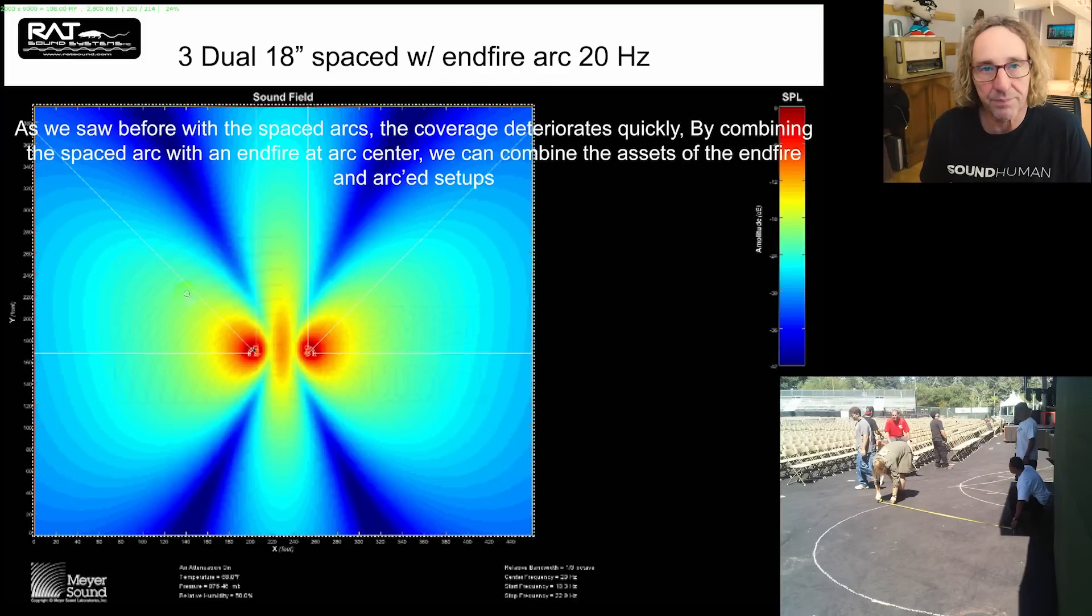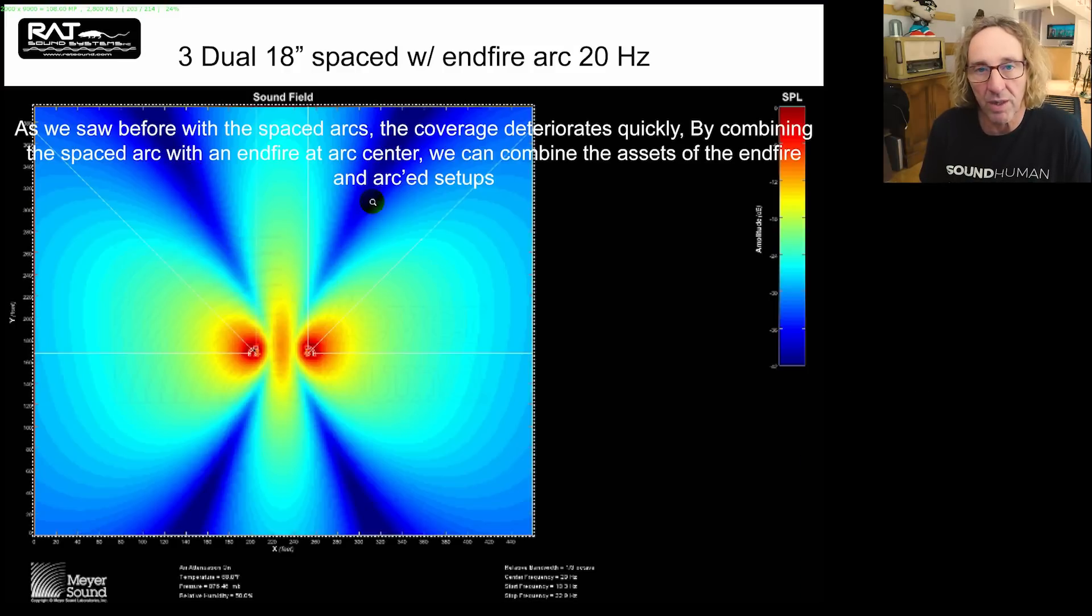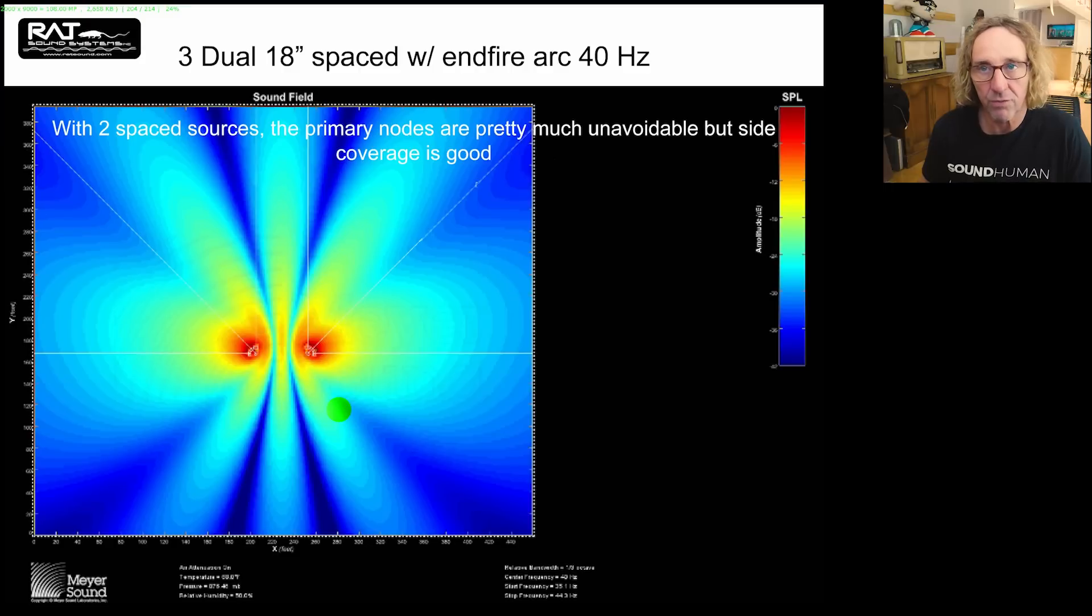Here we've got coverage at 20. We're seeing the same thing we see with all arrays that we've shown, where we've got these two nodes, the interference nodes, and we're not getting a lot of cancellation at 20. But on the other hand, we don't have a lot of energy at 20, especially with a band like Soundgarden. And unless you're doing EDM, most artists don't have a lot at that frequency. At 40 hertz, we are starting to see it shift forward a bit.